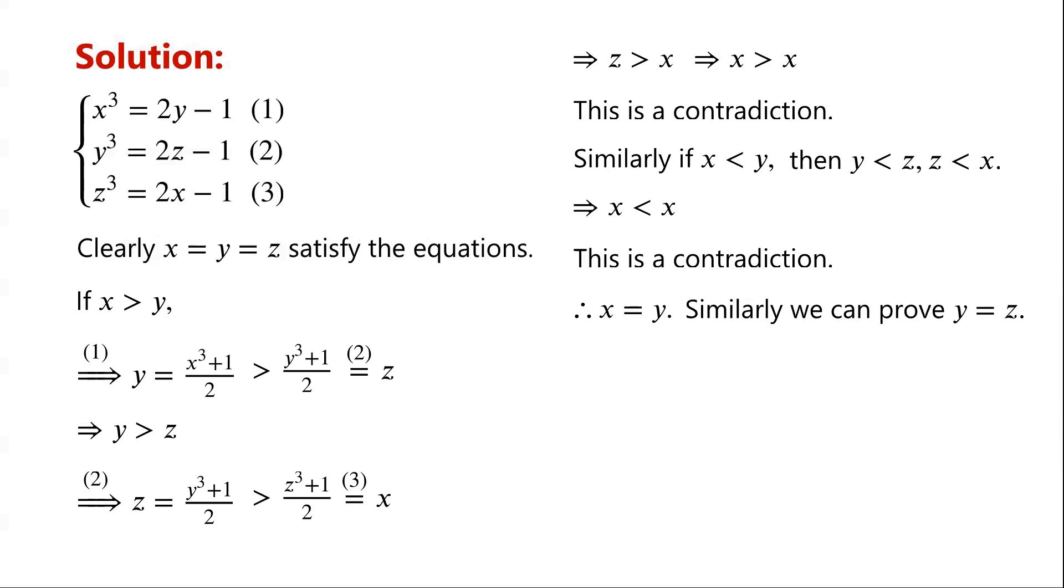So far, we have proved for x, y, and z to be a solution of the system of equations, x must equal y and y must equal z. Then from equation 1 we have x³ - 2x + 1 = 0.